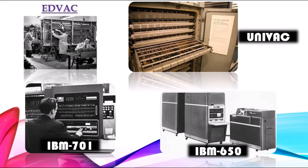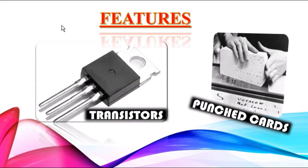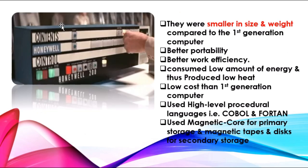The second generation of computers was introduced from 1959 to 1965. These computers based their technology on transistors, which replaced the vacuum tubes used in the first generation. As their inputs, these computers used assembly language and punch cards. The replacement of vacuum tubes by transistors led to a decrease in the size of the electronic components, resulting in a reduction in the overall size of the computers.